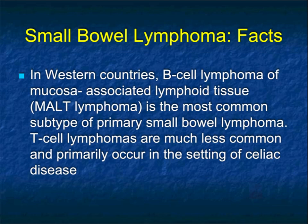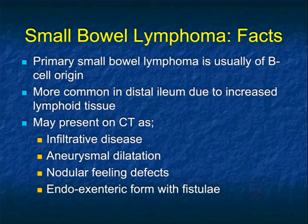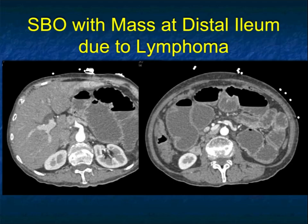T-cell lymphomas are much less common. Primary small bowel lymphoma is usually B-cell and more common distally. In terms of appearance, small bowel lymphoma is challenging because the appearance is very much like adenocarcinoma — it can be variable, from an infiltrating lesion to aneurysmal dilatation to single or multiple nodular filling defects to an endo-exenteric form with fistulae.